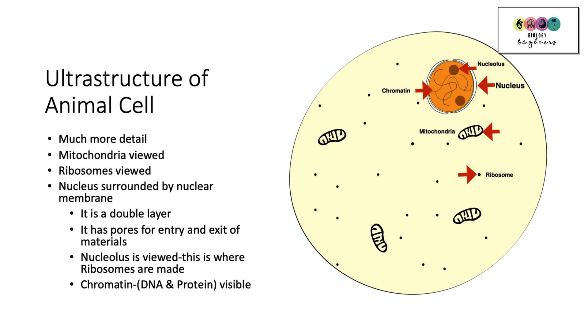You can see the mitochondria in detail. You can see little structures called ribosomes. These make proteins. So these are where proteins are made. You can also see much more detail in the nucleus. You can see that it's surrounded by the nuclear membrane. It is in fact a double layer. So it's two layered membrane. It has pores for entry and exit. So substances can go into and out of the nucleus.